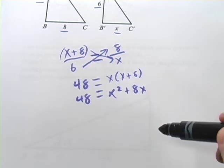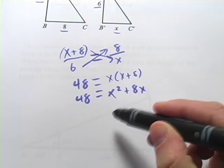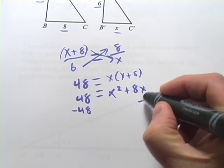And the first thing you do with a quadratic when you're trying to factor it or solve it with a quadratic formula is set it equal to 0. So I'm going to subtract 48 from both sides.